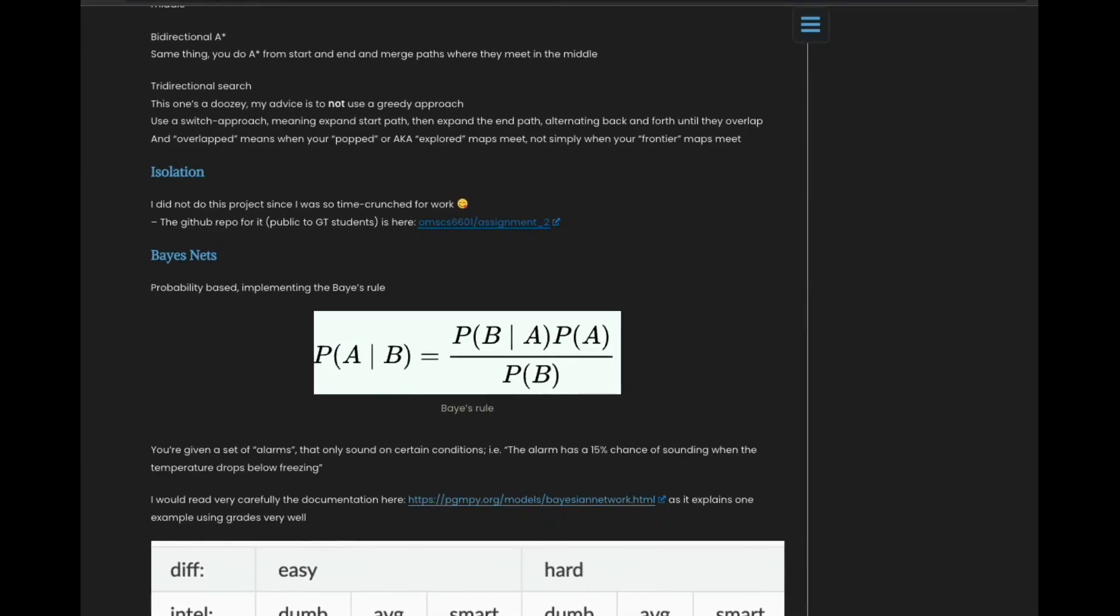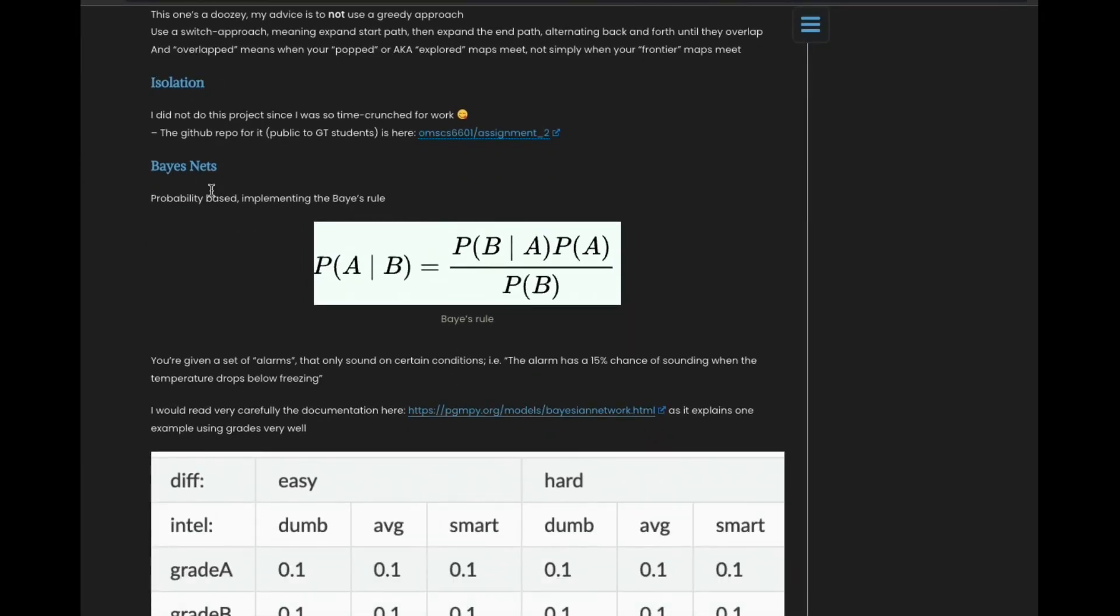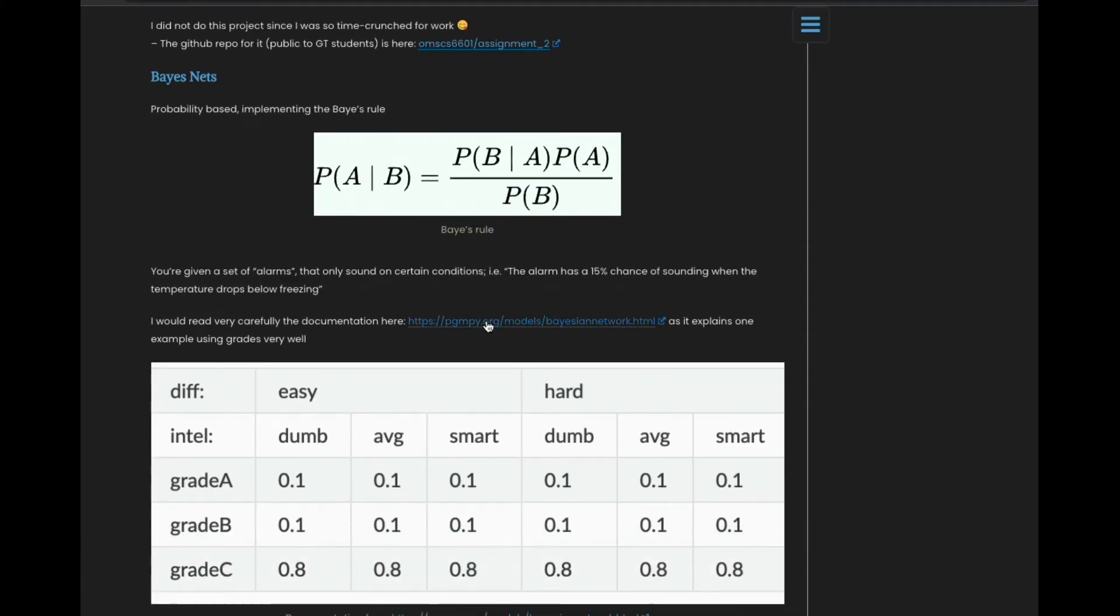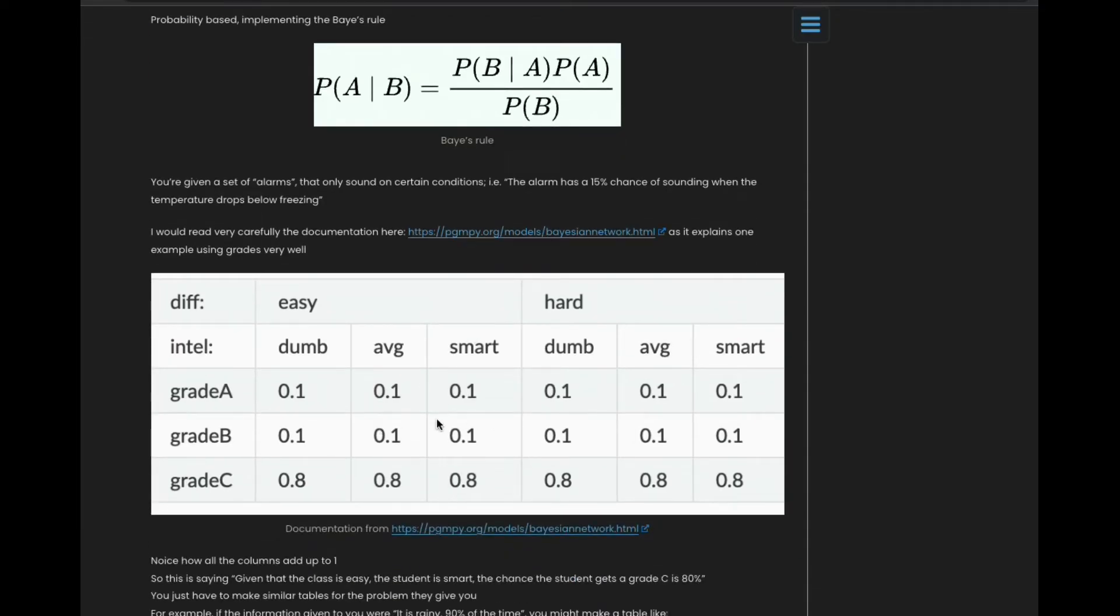Next project here is Bayes nets. Bayes nets is going to be conditional probability, and you're going to be implementing some conditional probability using a Python package called PyGMy Pie. Here's one example from the documentation of their package. You're basically going to be saying, like, hey, if I'm taking a class and the difficulty level of the class is easy and the intelligence level of the student is dumb, the last three rows here are what are the percentage chance that I get a grade A or a B or a C.